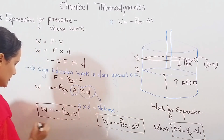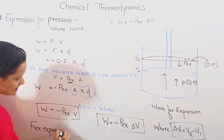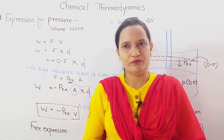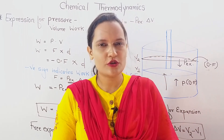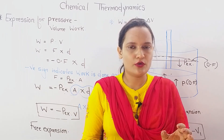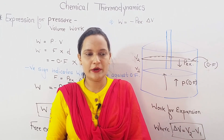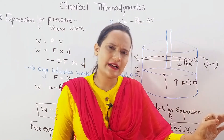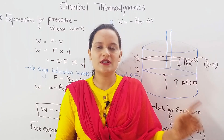Now, what is the case of free expansion? In entrance exams or test papers, they ask: if external pressure is zero, how much work will be done? It is a very simple question. If external pressure is zero, no work will be done. W = -P_external × ΔV = 0. So directly, in free expansion, if external pressure is zero, no work is done.